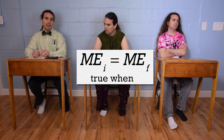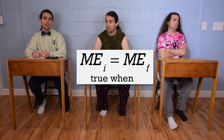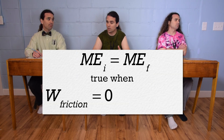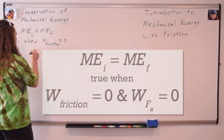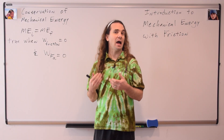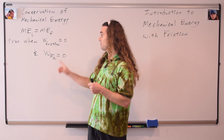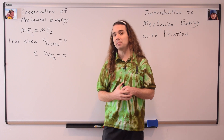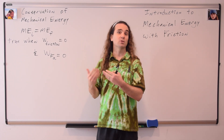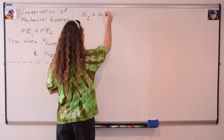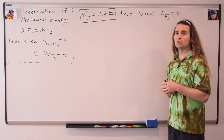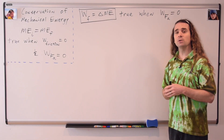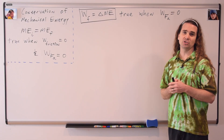I actually don't remember. Mechanical energy is conserved when there's no work done by friction and there is no work done by the force applied. Thank you. Now we are going to discuss how to solve problems with a work done by friction. We will leave problems with a work done by force applied for later. When the work done by the force applied on an object is equal to zero, the work done by friction is equal to the change in mechanical energy.